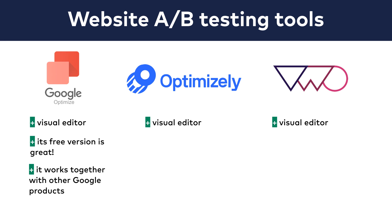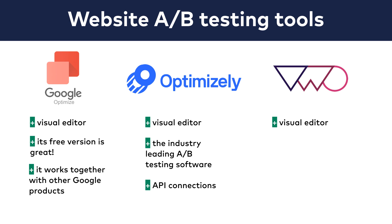Another popular choice is Optimizely. It's the industry-leading A/B testing software, and I've used it for quite a while as well. Optimizely is slightly better than Google Optimize — its interface is a bit more user-friendly and it has many more features available. But I have to mention that you will use most of these additional features only when you get really advanced with A/B testing. As for integrations, you can integrate many tools with Optimizely too. They have API connections to heatmapping tools and even to Google Analytics, although that connection won't be as feature-rich as it is with Google Optimize.